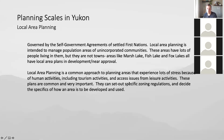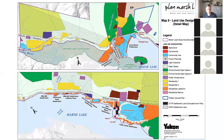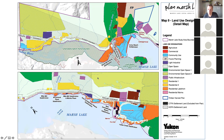Local area plans set out specific zoning regulations and decide what appropriate development in an area looks like. I'm going to use the Marsh Lake local area plan as an example. This is the zoning bylaw for a portion of Marsh Lake where the local area plan exists. Can you see my cursor? Okay, great.